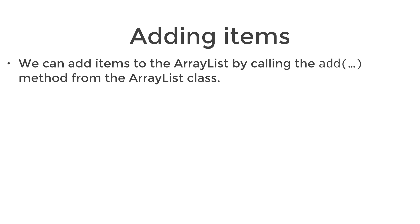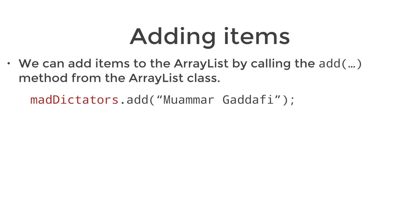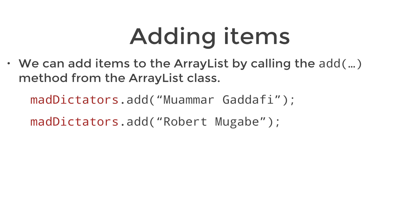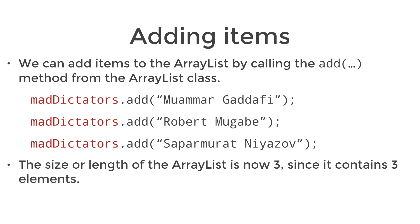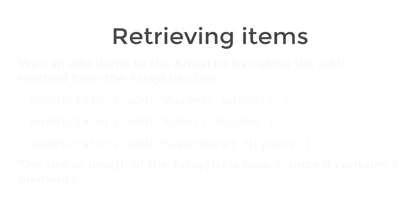We can now add items to this array list by calling the add method from the array list class. You simply have the name of your array list variable — in this case madDictators — then the dot operator, then the add method, and inside the brackets the data you want to add to the array. We're doing that three times, and now we have an array list of size three because it contains three elements.